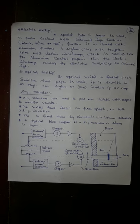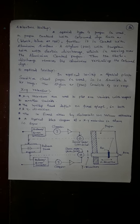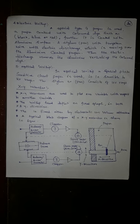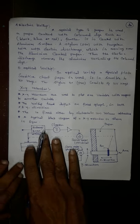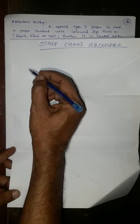Next one is electrical writing. A special type of paper is used, a paper coated with a colored dye such as black, blue or red. For example, this is a white paper. White paper or any full color sheet will be coated with an aluminum sheet. Suppose if we remove that aluminum, the color will be visible to our eye. That is the basic mechanism.